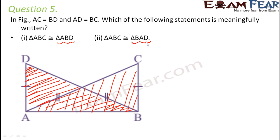Both of these mean the same triangle. It is just that we need to find out which point corresponds to which point, because only the order is changed. Triangle ABD and triangle BAD both refer to the same triangle. But when we talk about congruence, we talk about the corresponding vertices.